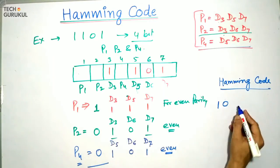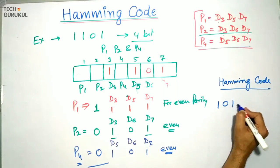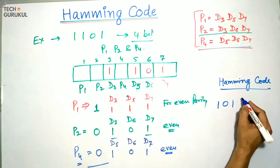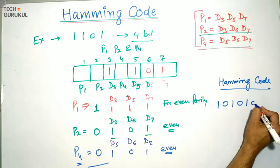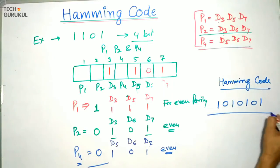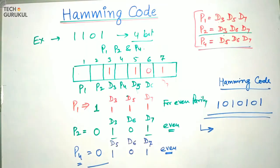So the Hamming code generated is: P1 is 1, P2 is 0, D3 is 1, P4 is 0, D5 is 1, D6 is 0, D7 is 1 — giving the sequence 1 0 1 0 1 0 1. That's all for this presentation. In the next lecture we will do more examples considering error detection and correction. Thank you.